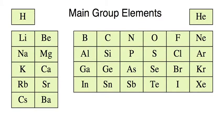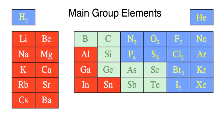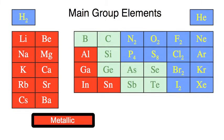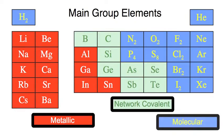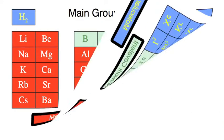The main group elements as materials present as a diverse set. We have the metallic elements to the left-hand side of the periodic table. In the middle we have the network covalent elements such as silicon and germanium. And to the right we have the elements presenting as molecular materials, van der Waals materials.